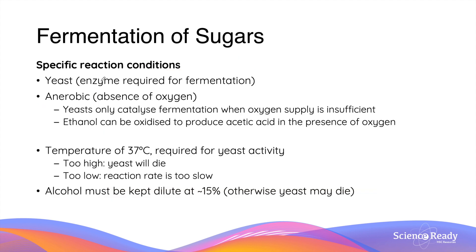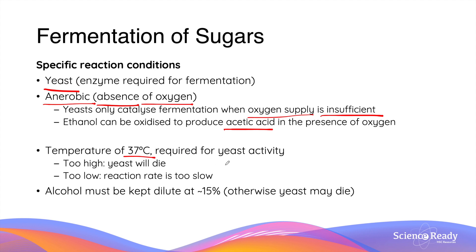Fermentation requires specific reaction conditions. This includes yeast acting as the catalyst, and it also requires an anaerobic environment, referring to the absence of oxygen. The yeast enzyme can only catalyze fermentation when oxygen supply is insufficient, because in the presence of oxygen, ethanol can also be oxidized to produce acetic acid, which is not the desired product from fermentation.